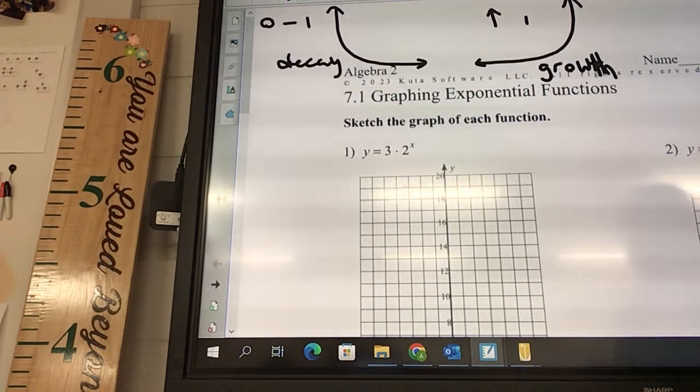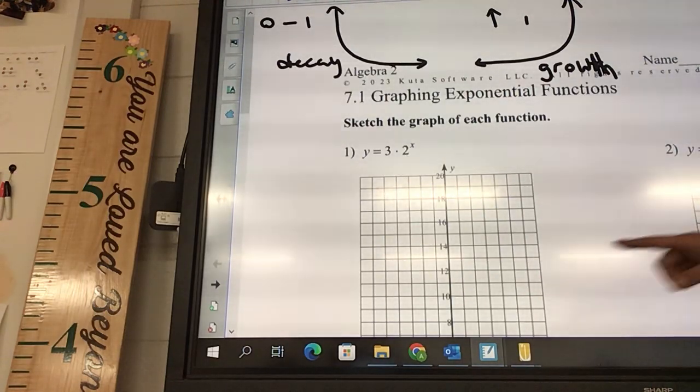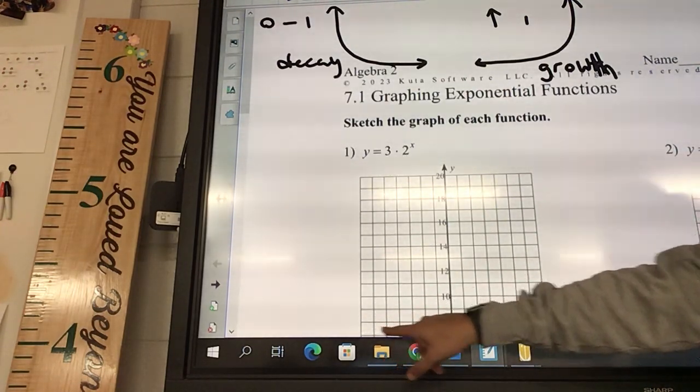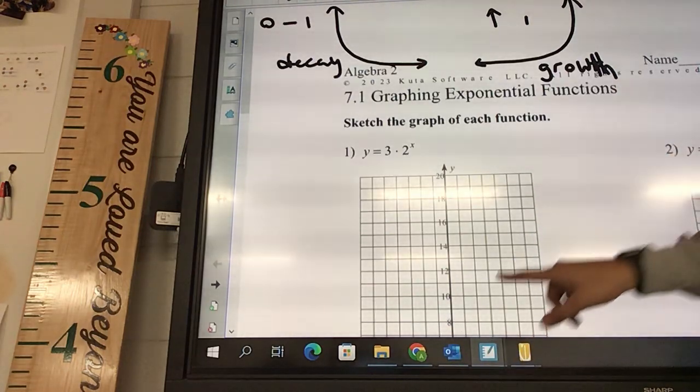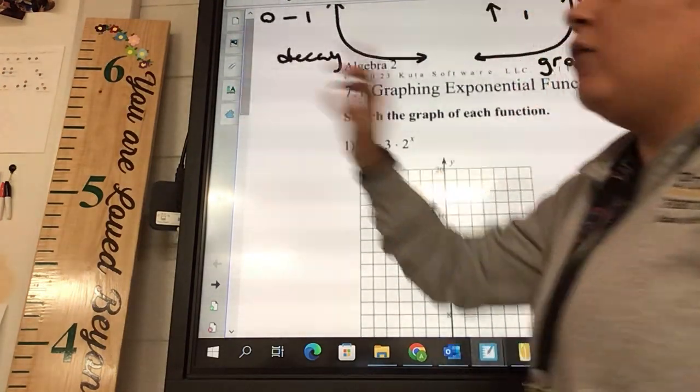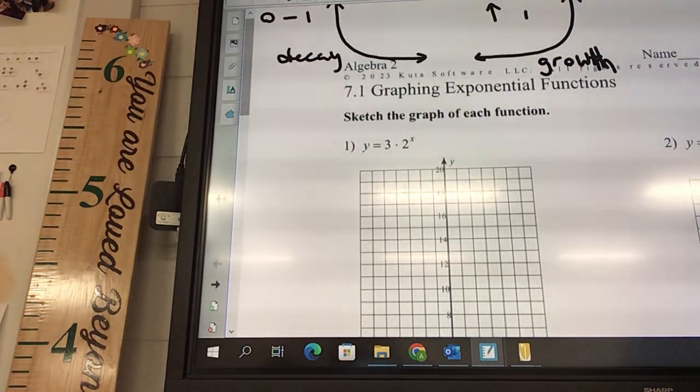So if we look at number 1, is that growth or decay? What's attached to the X? 2. So that's bigger than 1, so it's going to be growth. So our graph, we know, is going to be going up this way. And you need to have that in mind because you're only going to plot a couple of points. And so you need to know what the picture is going to look like.